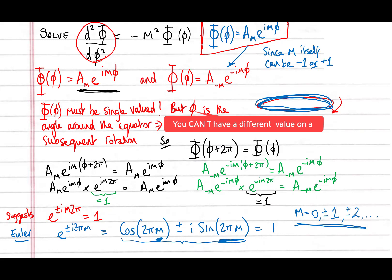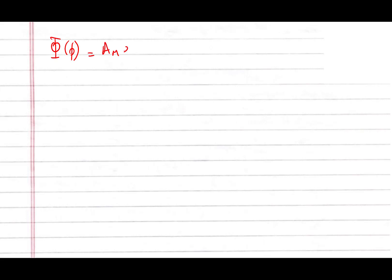Our solution is not yet normalized, so let's go to the next page. To normalize, we integrate the complex conjugate of the eigenfunction multiplied by the original eigenfunction over one full loop around the equator (from 0 to 2π). The constant A_m² can be pulled out. The complex conjugate of e^(imφ) is e^(-imφ), and multiplying e^(-imφ) · e^(imφ) = e^0 = 1.